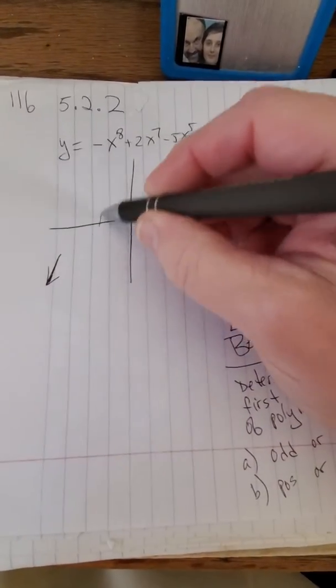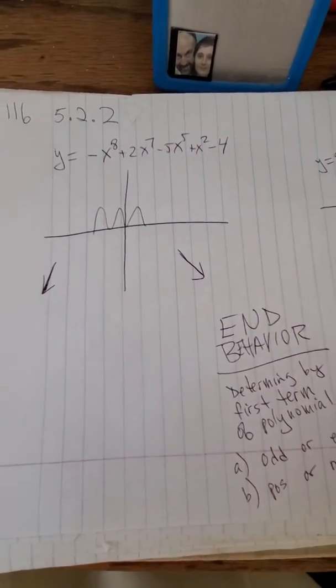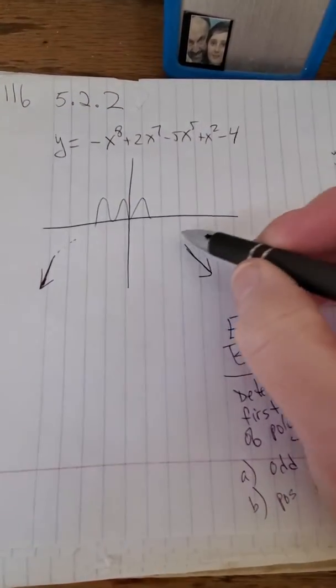You're going to have a whole bunch of wiggles and squiggles in here. I don't know what it's going to look like. But eventually, it's going to come down like this, and it's going to come down like this. This is called end behavior.